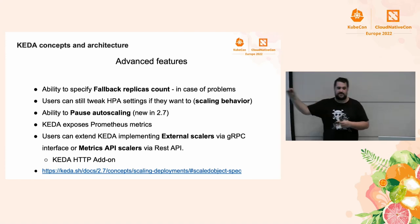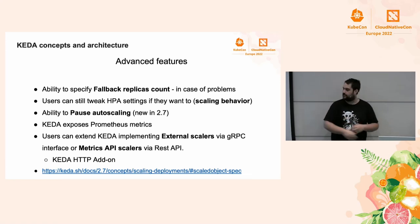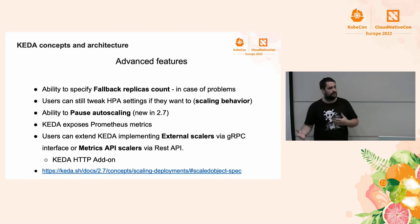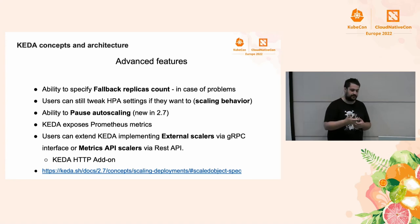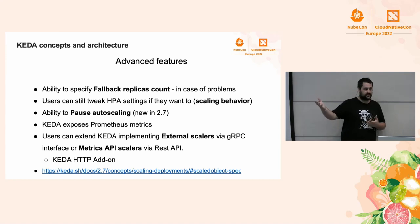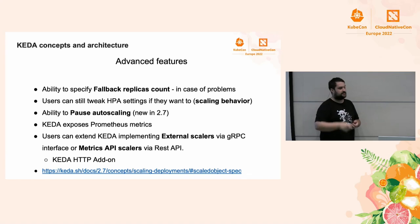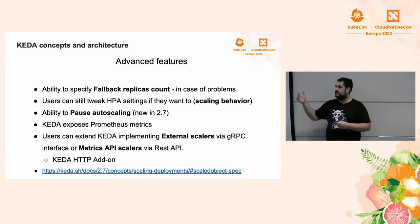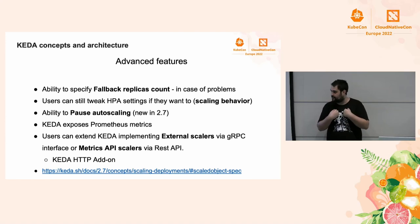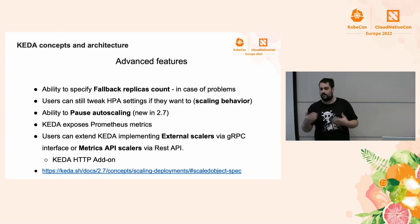Another capability is pausing autoscaling. Imagine you are under maintenance and need to scale to zero. With other tools you'd have to remove the HPA, because if you simply scale down the deployment, HPA would scale it back up. With this feature you can add an annotation to your ScaledObject — we'll see this in the demo — to say 'pause at this number of instances.' It's a way to handle maintenance or unexpected problems.